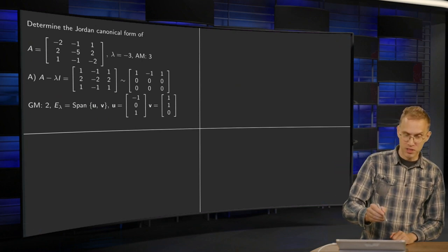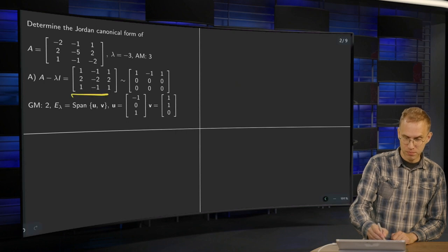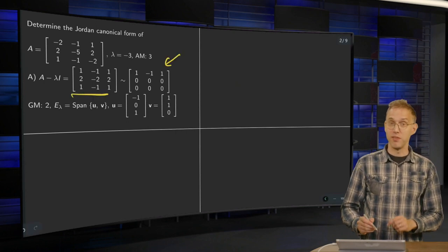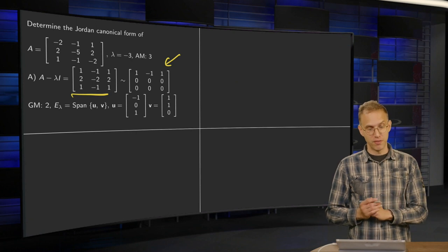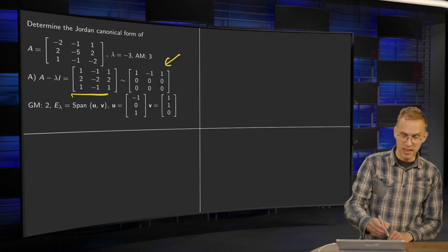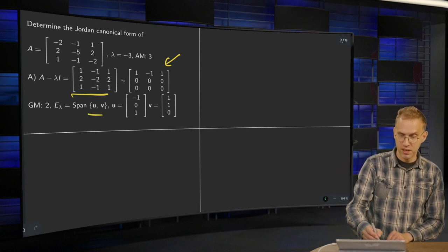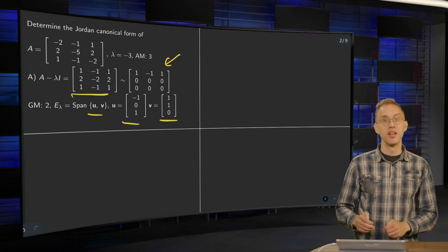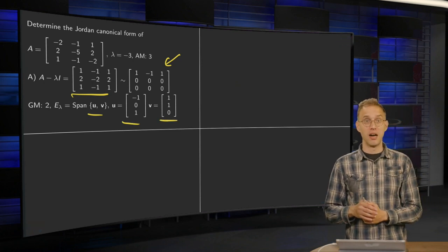Then we compute A minus lambda I. That's over here and if we reduce, we see that we will have two free variables, which means that E_lambda is a span of u and v where u is here and v is there. So the geometric multiplicity is now 2.